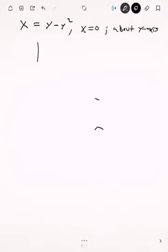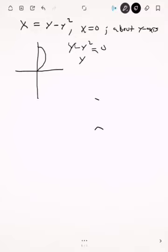The first thing I'm going to do is draw my region. Here is the function y minus y squared and x equals zero. By setting the two x expressions equal, you get y minus y squared equals zero. Factoring out y gives y times (1 minus y) equals zero, so y equals zero and y equals one.